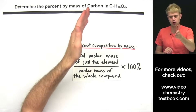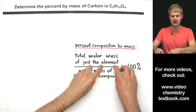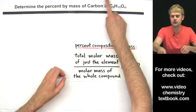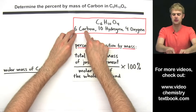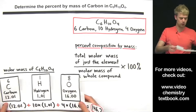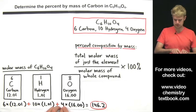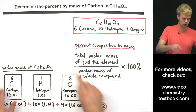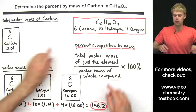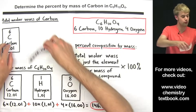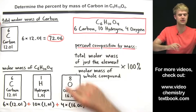Last problem: determine the percent by mass of carbon in C₆H₁₀O₄. We need the total molar mass of just the carbon and the molar mass of the whole compound. The compound has 6 carbons, 10 hydrogens, and 4 oxygens. Adding their molar masses together — 6 carbons, 10 hydrogens, and 4 oxygens — gives 146.2. Zooming in on just the carbon: 6 × 12.01 = 72.06, the molar mass of just the carbon.